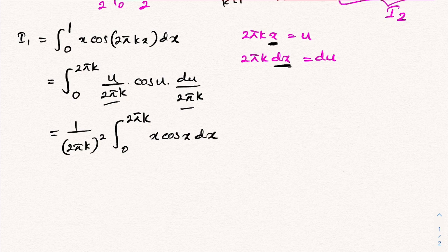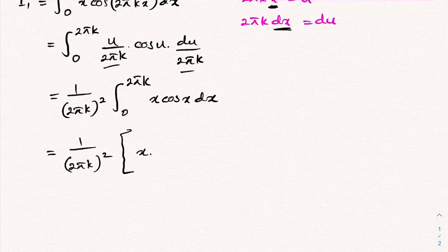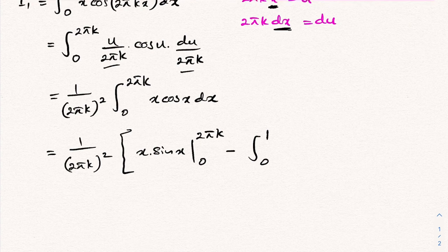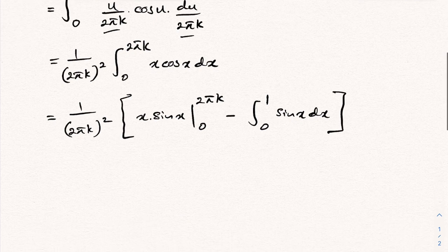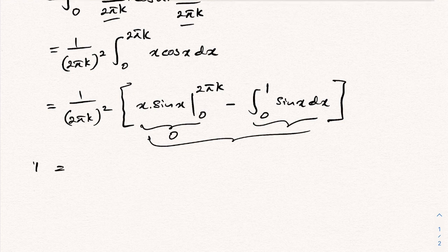We integrate u·cos(u) by parts: u·sin(u) evaluated from 0 to 2πk, minus the integral of sin(u)du from 0 to 2πk. Applying the limits, the boundary term is zero, and the integral of sin(u) over a full period also gives zero. Therefore I1 = 0.